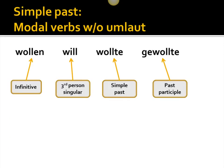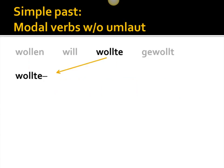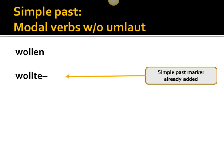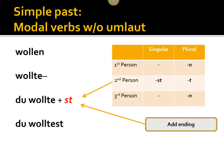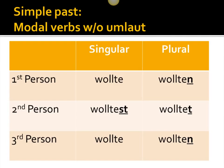Some modal verbs don't have an umlaut, and if it doesn't have an umlaut, we still use the simple past form — the third principal part — but there's nothing to take off. So we have wollte, which already has the simple past marker added. We simply tack on the endings from the conjugation pattern, with the result that we get: ich wollte, du wolltest, er/sie/es wollte, wir wollten, ihr wolltet, sie wollten. That's basically how to form the simple past with irregular verbs and with modal verbs. The next presentation will be looking specifically at strong verbs and how to form the simple past from them.